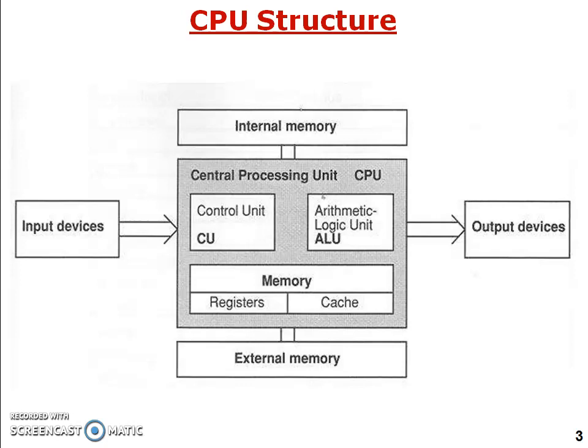The internal memory is known as register memory and cache memory. Cache memory is actually the highest-speed memory, whose speed is close to the CPU and faster than RAM. That is why cache memory lies between the central processing unit and the RAM memory.